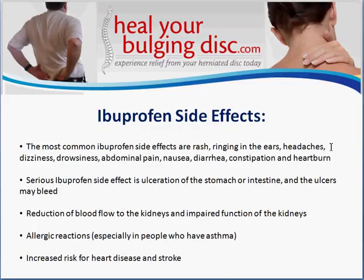The side effects of ibuprofen can be pretty serious. The most common side effects are a rash, ringing in the ears, headaches, dizziness, drowsiness, abdominal pain, nausea, diarrhea, constipation, and heartburn. More seriously, ulceration of the stomach and intestine can occur, and these ulcers may bleed — sometimes without you even feeling pain. If you're taking ibuprofen and you notice your bowel movements are black or very dark in color, get that checked out right away, because that indicates blood clotting within the digestive tract — a sign of an ulcer in the upper GI tract.